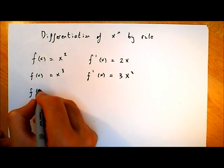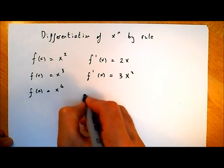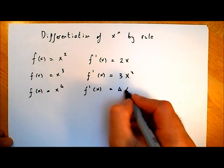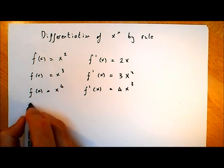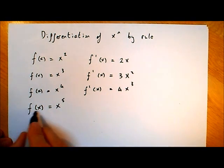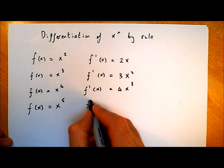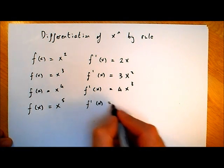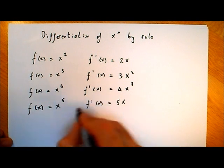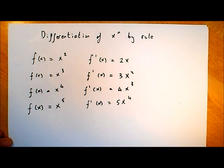If we keep going with a few functions, say x to the power of 4, then f dash of x would differentiate to give us 4x cubed. One more: if we differentiate f of x equal to x to the power of 5, if you try these by first principles they'll all work out. Differentiating x to the power of 5, we get 5x to the power of 4.